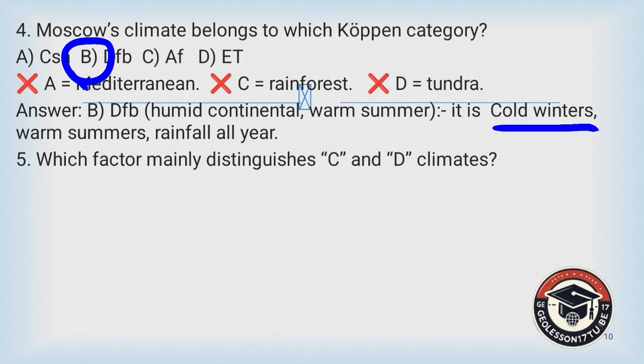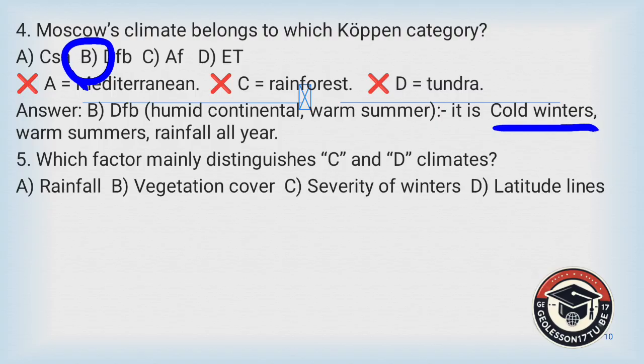Question number five: Which factor mainly distinguishes the climate classifications represented by Koppen's 'C' and 'D' climates? A) rainfall, B) vegetation cover, C) severity of winters, D) latitude lines.